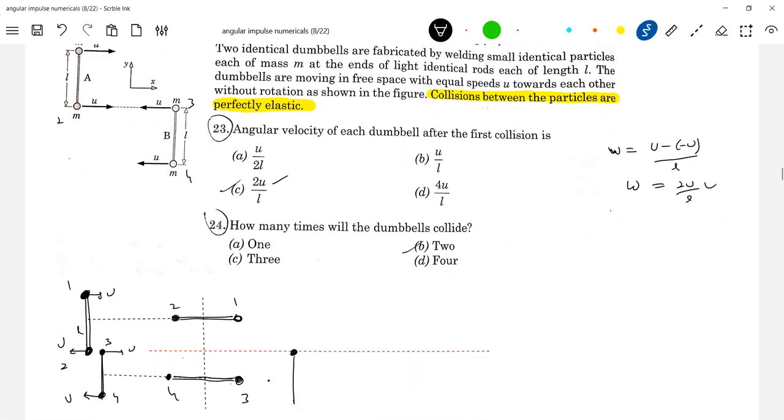So it will be, this will be 2, 1, 4, 3. They will collide, they will be moving with the velocity U like this. They will collide. And again exchange of velocity occurs.